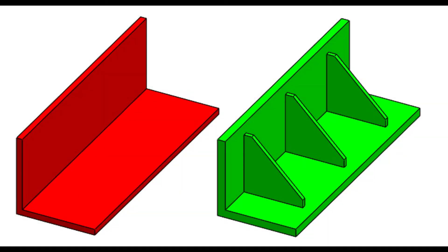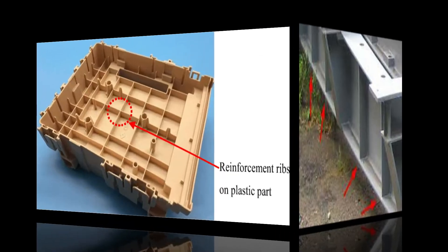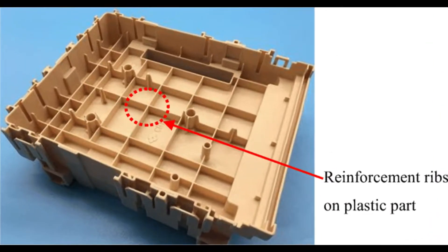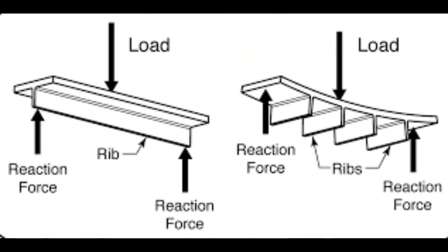Hi friends, welcome back to CAD Double. This is Engineer Brian Omar and today we'll be creating a tutorial on how to create ribs in SolidWorks, and we'll be doing this by doing three examples. Basically, ribs are created to give strength to your part and they act as reinforcement in your structure.